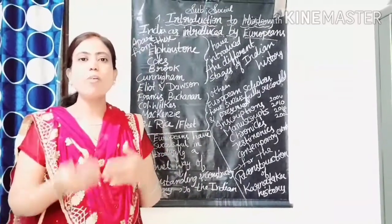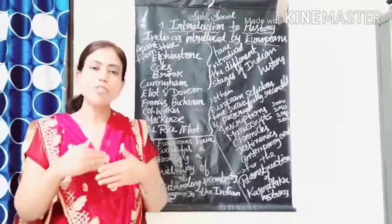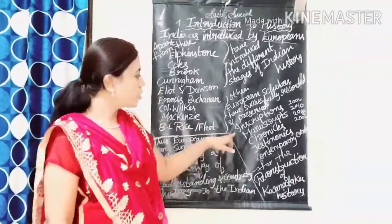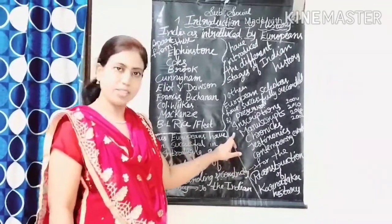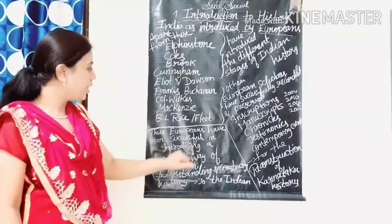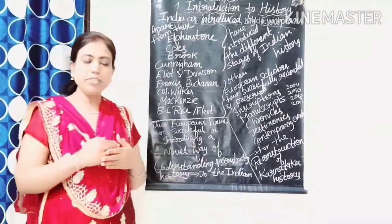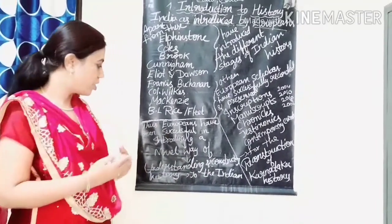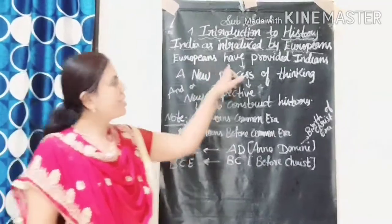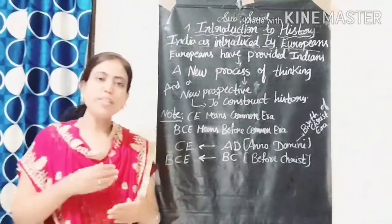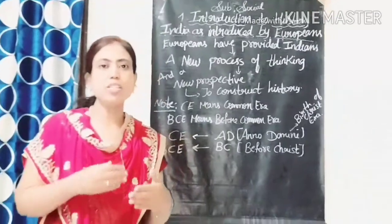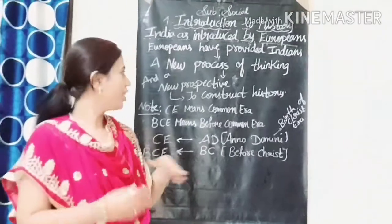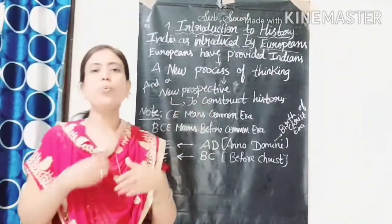Indians recorded history in the form of Puranas and myths, transmitted orally from generation to generation. But the European model required visible proof — manuscripts, chronicles, testimonies, contemporary events, and inscriptions. Thus Europeans successfully introduced a novel, meaning interesting, way of understanding and constructing history to the Indians, providing a new process of thinking — how to collect information on the basis of proof and evidence — and a new perspective, meaning a new view or idea, to construct history.